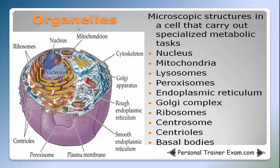A review on what organelles are: organelles are microscopic structures in a cell that carry out specialized metabolic tasks. The organelles are nucleus, mitochondria, lysosomes, peroxisomes, endoplasmic reticulum, Golgi complex, ribosomes, centrosomes, centrioles, and basal bodies. And these are all inside the cytoplasm.